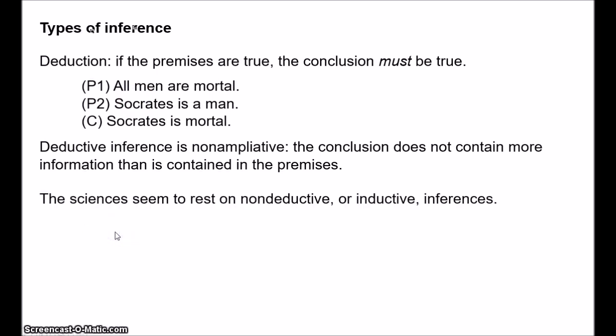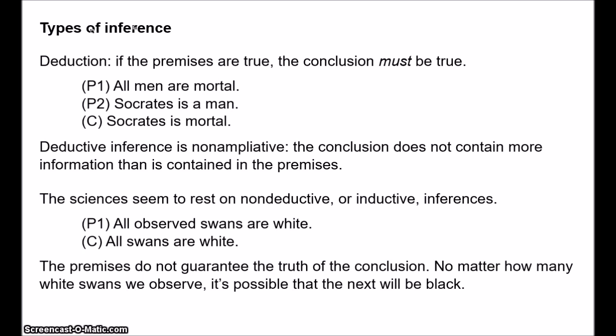So science instead appeals to certain non-deductive or inductive inferences or induction. The classic examples of induction are inferences like all observed swans have been white, therefore all swans are white. Or maybe we might say, you know, all observed swans have been white, therefore the next swan I observe will be white. In this case, the premises do not entail the conclusion. They don't guarantee the truth of the conclusion. We're saying, well, you know, swan number one is white, swan number two is white, swan number three is white, and so on. No matter how many swans we observe, it's possible, it's imaginable, that the next swan we observe will be black.